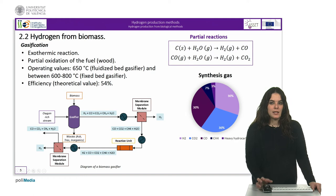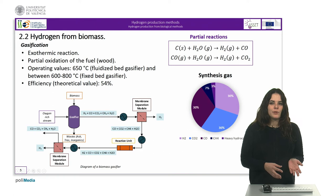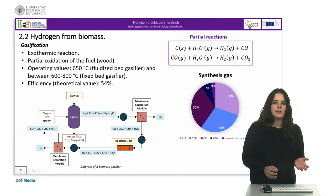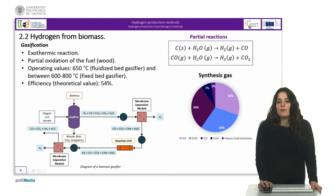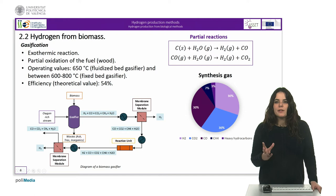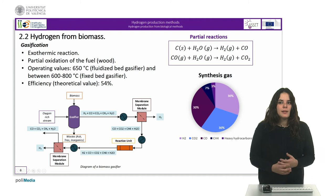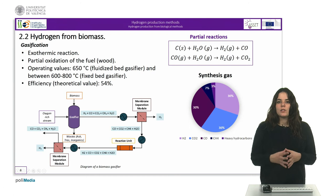For the gasification of biomass using catalysts in a fluidized bed, we need to operate at temperatures of about 650 degrees Celsius, while in a fixed bed they operate in the range between 600 and 800 degrees Celsius. The theoretical efficiency of the biomass gasification process depends on the temperature, the present amount of steam and oxygen used, and the optimum theoretical value is 54%. In order to improve the efficiency of this process, it is very interesting to capture CO2 at the same time as the gasification takes place, using for example calcium oxide.